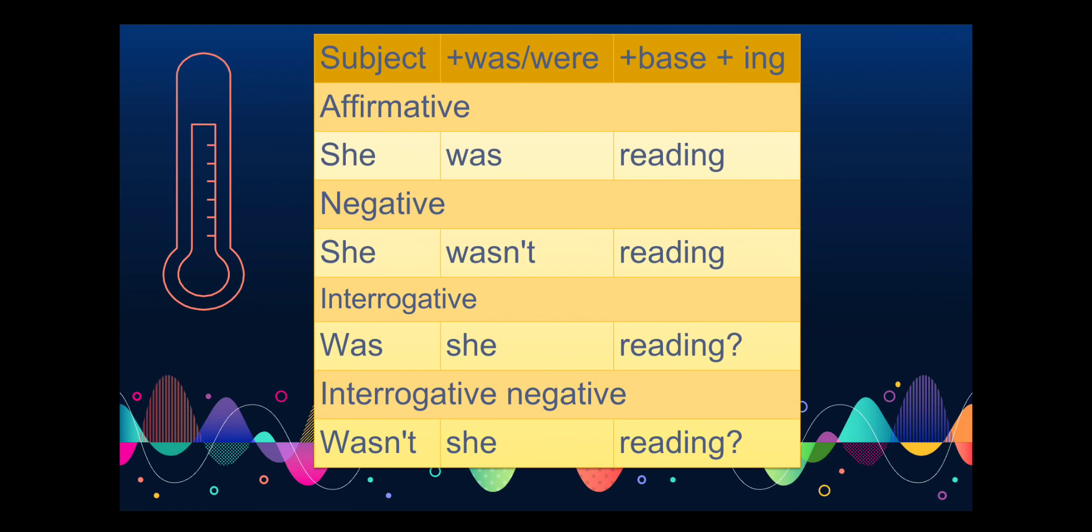Let's look at examples of affirmative sentence first. She was reading. Negative: She wasn't reading or she was not reading. Interrogative: Was she reading? Interrogative Negative: Wasn't she reading?